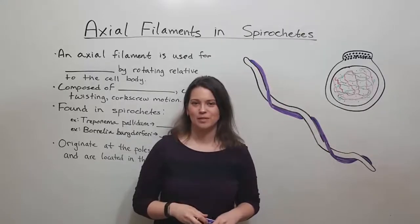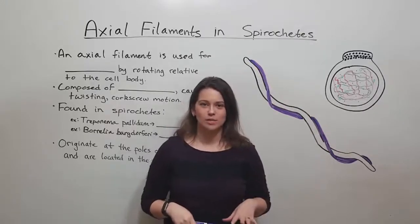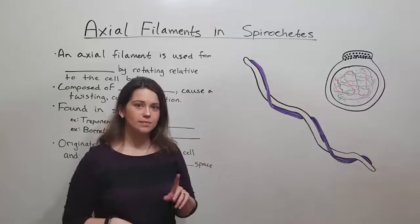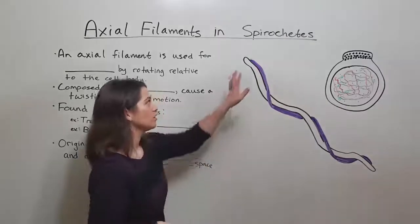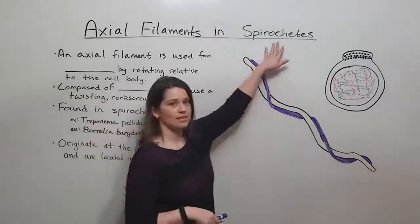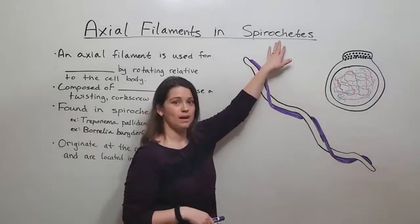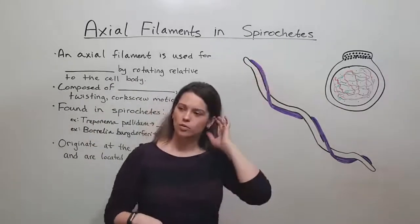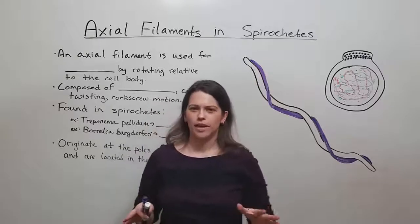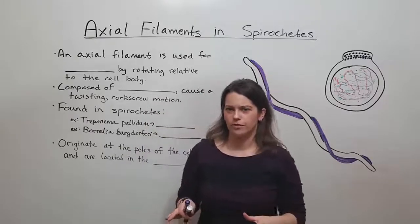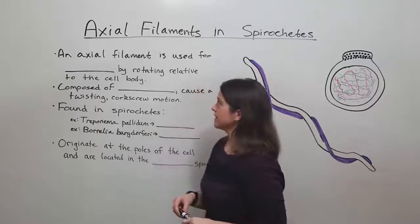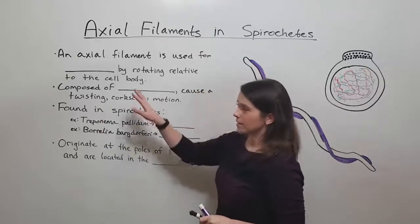Hi everyone and welcome to Biology Professor. Today we're going to be talking about axial filaments, specifically axial filaments found in bacteria known as spirochetes. These are different from the axial filaments that are found in sperm cells, for instance. So let's get started.